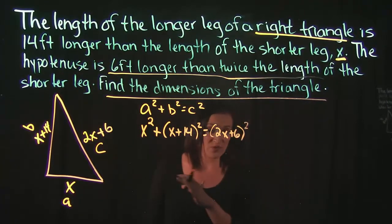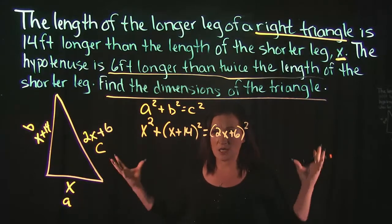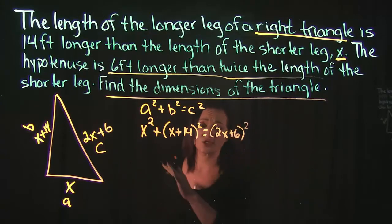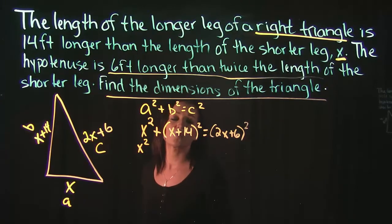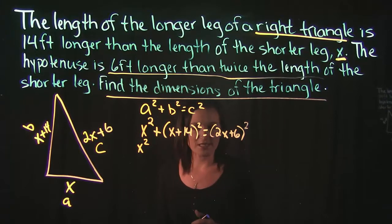Now there's going to be a lot of algebra with the next couple of steps here, a lot of multiplying and simplifying and things like that. So let's take this one step at a time. Let's drop down that x squared while we focus on multiplying this x plus 14 squared.